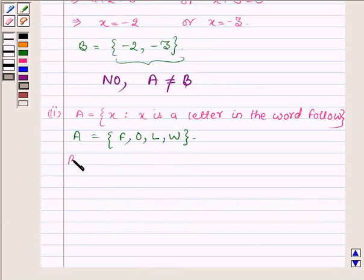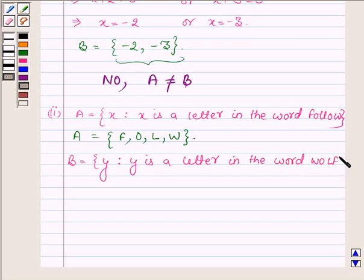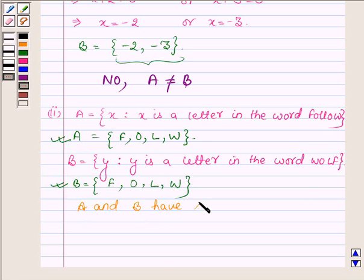Now B is the set which contains all those y such that y is a letter in the word 'wolf'. Thus B is the set which contains the letters F, O, L, and W. On observing B and A, you find that they exactly have the same elements. Thus we can say that yes, the set A is equal to B.